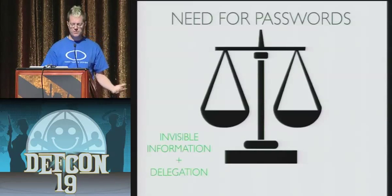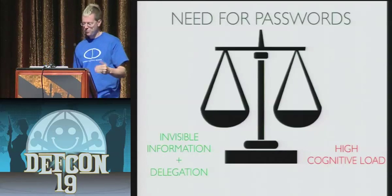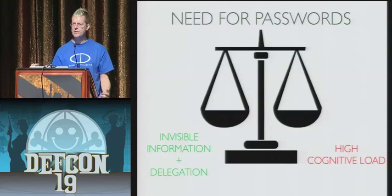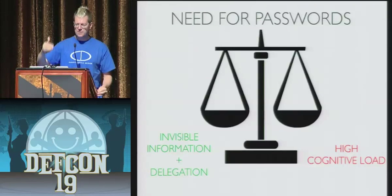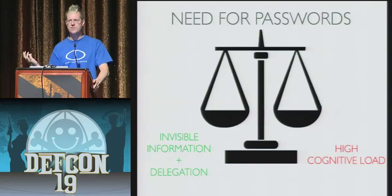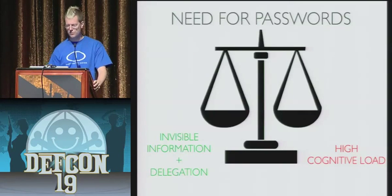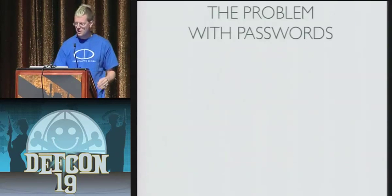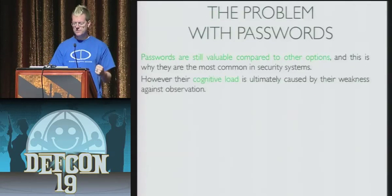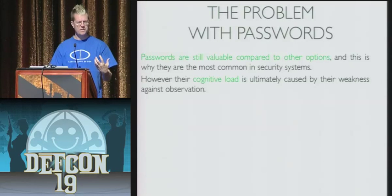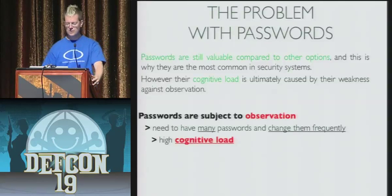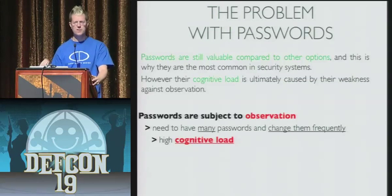We like passwords because they're invisible and delegatable, but the cognitive load has always been a big problem. So many massive breaches don't depend on individual implementation problems — they depend on people reusing passwords. Someone gets your Gmail password and suddenly they've broken into all the critical systems you also have access to. We tell people not to do that, but they do it anyway. The big weakness is that cognitive load causes reuse, making passwords even more weak against observation. You need many of them and need to change them frequently.